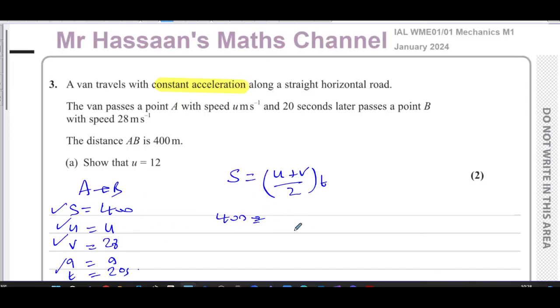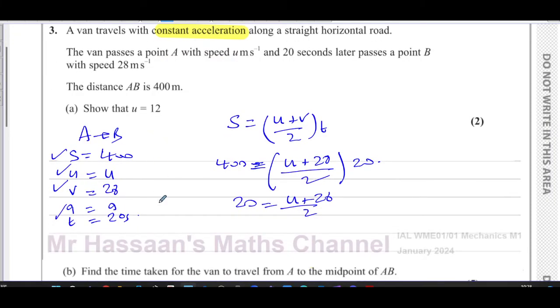We know what V is, V is 28. So S equals 400, we have U plus 28 over 2 times 20. We can get rid of the 20, divide both sides by 20. We're going to have 400 divided by 20, which is 40 divided by 2, which is 20, equals U plus 28 over 2. Get rid of the 2 by multiplying both sides by 2. We have 40 equals U plus 28, therefore U is going to be 40 minus 28, which is 12, as we had to show. So there's the answer to part A, very simple.